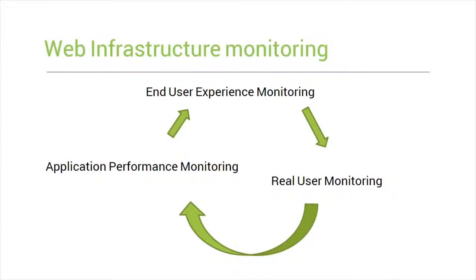When it comes to web infrastructure monitoring, there are three major components: the end user's perspective, the real user's perspective, and the developer's perspective. End user experience monitoring is done from a controlled environment where you define the memory, RAM, and network. Real user monitoring is done from actual user visits. Application performance monitoring helps developers analyze where delays are occurring.